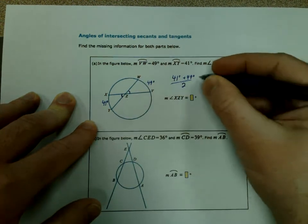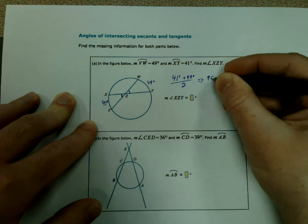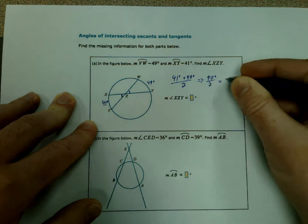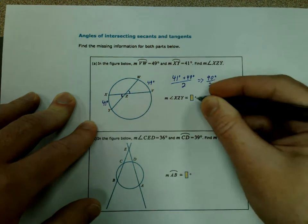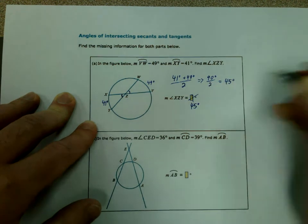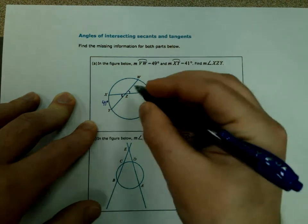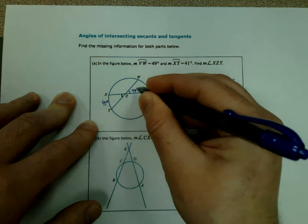So we have 41 and 49 for a total of 90 degrees divided by 2. So we get 45 degrees as our final answer. So both of these are 45 degrees.